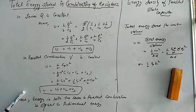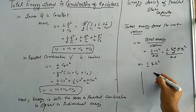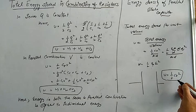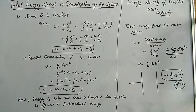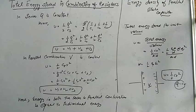Good morning students. We have studied that a capacitor stores energy given by the formula: energy = ½CV². From this basic formula, since Q = CV, we can derive two more equivalent forms. So if one capacitor has capacity C and potential V, then ½CV² is the energy stored in that capacitor.